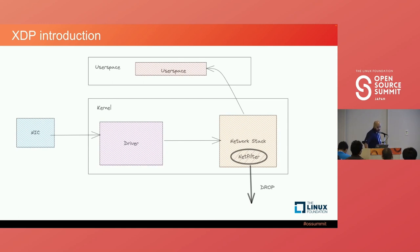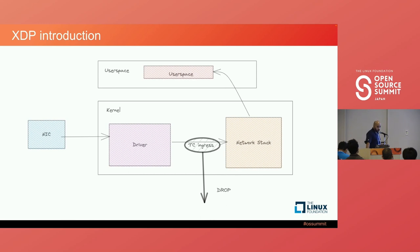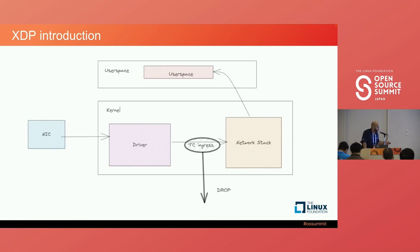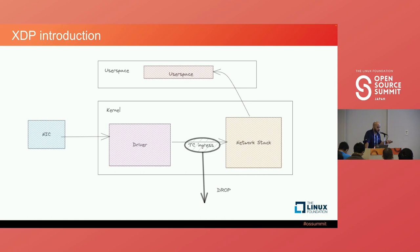TC, traffic control, is another way of dealing with traffic. It can be attached between the driver and the network stack — here we can make a decision to drop the traffic. It still went through the driver, but it's better than the netfilter step we saw earlier. Though it's still a bit after the driver, so we can optimize this further.